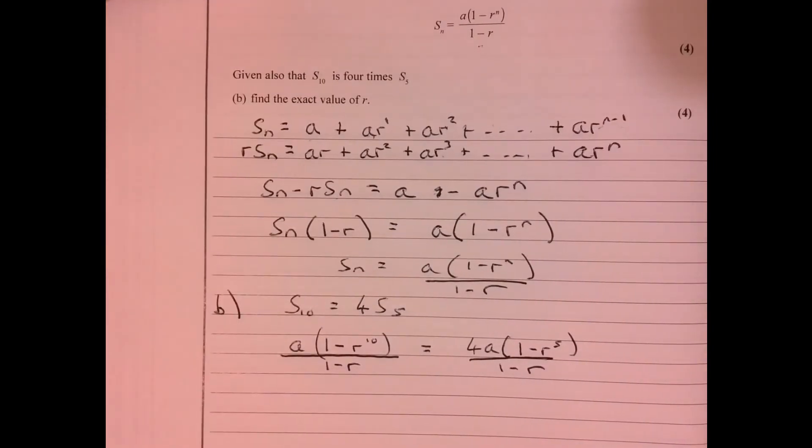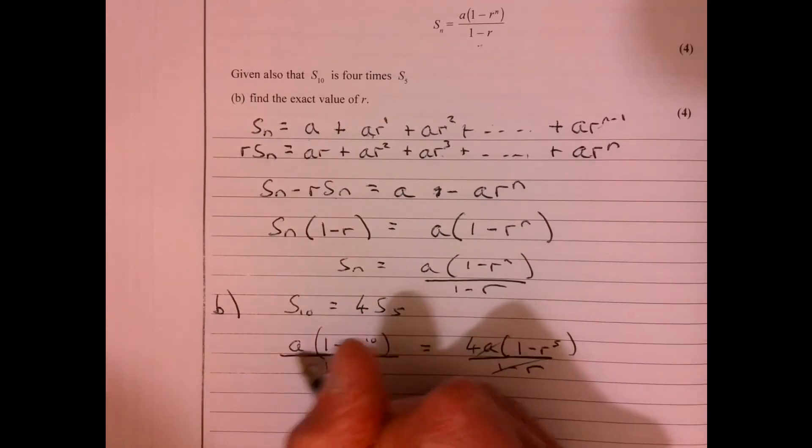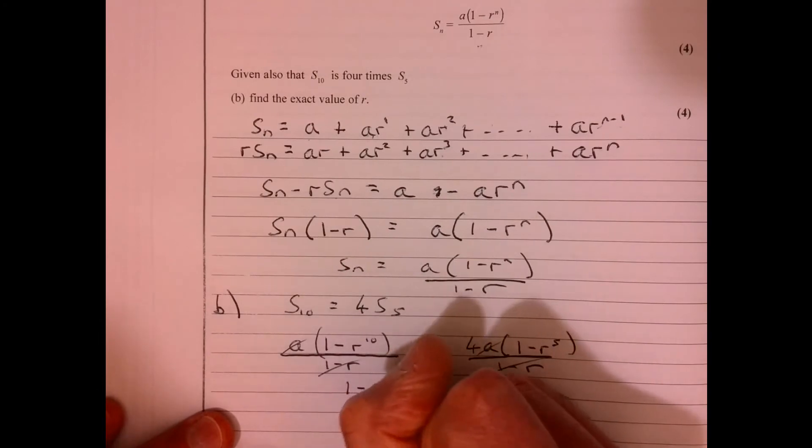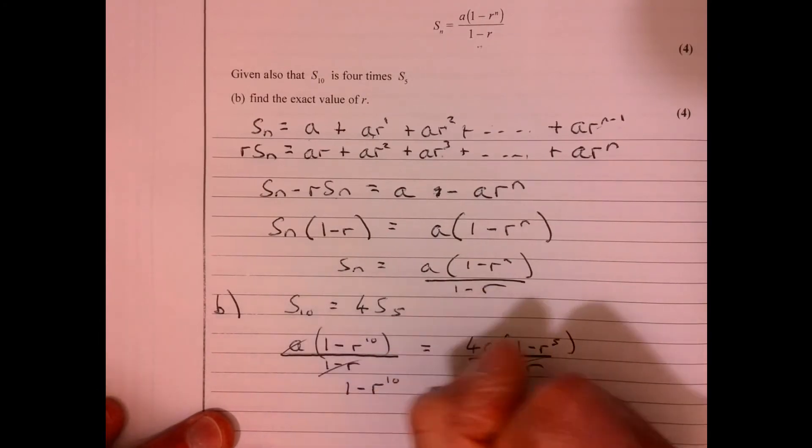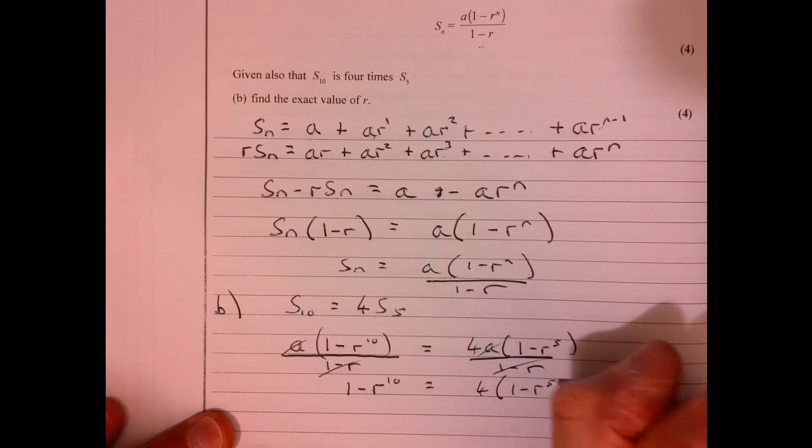Okay, so let's have a look, see if anything obvious can cancel. Okay, so I can cancel those bits, I can cancel the a's. So that's going to give me 1 minus r to the 10 equals 4 lots of 1 minus r to the 5.